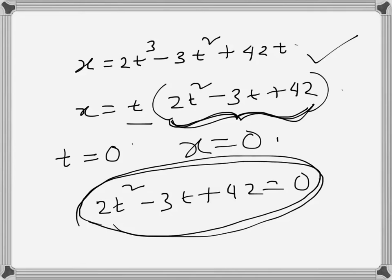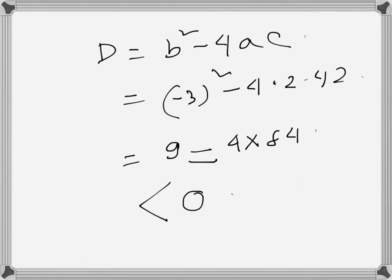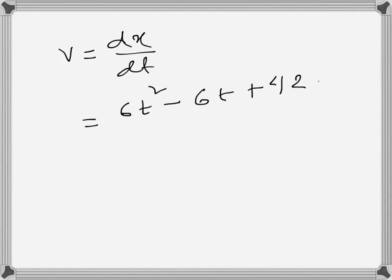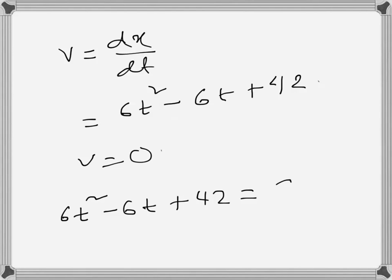Now we have to show that the particle is never at rest. When the particle is at rest, the velocity is 0. Velocity is the differentiation of displacement, so v equals dx/dt. Differentiating, we get 6t² minus 6t plus 42. This is the velocity equation.